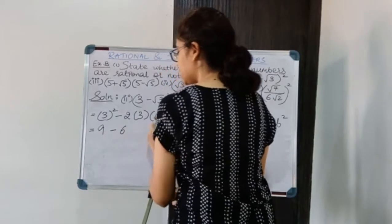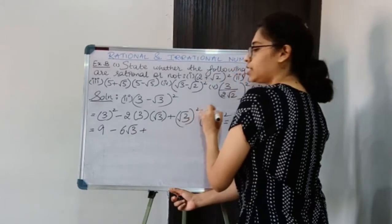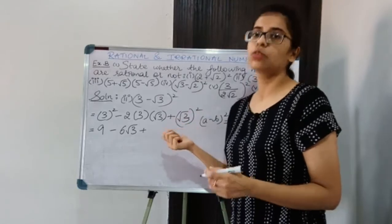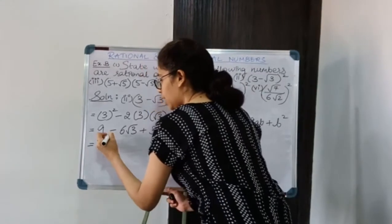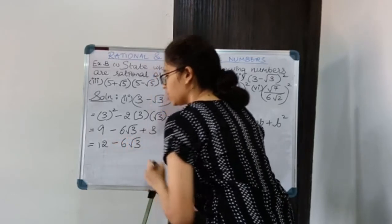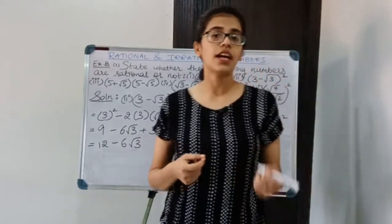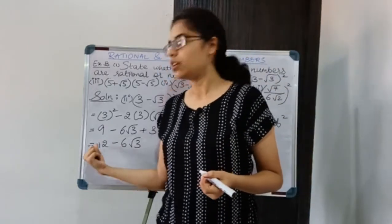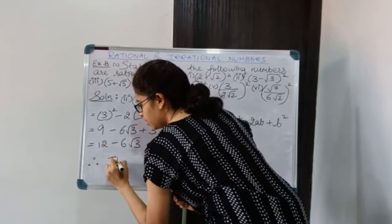Opening the brackets: 3² = 9, then 2 × 3 = 6 so we get 6√3, and (√3)² — the square and square root cancel out — gives 3. So 9 + 3 = 12, giving us 12 − 6√3. Now 12 is a rational number but 6√3 is irrational since it contains √3, so the entire expression is an irrational number.